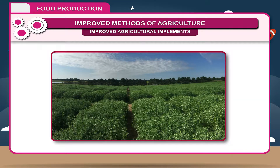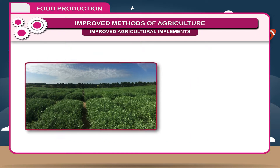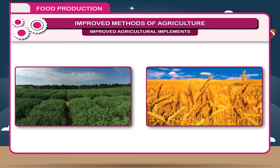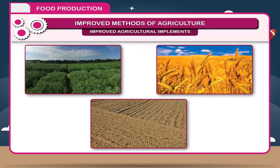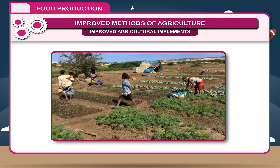Generally, a pulse crop is grown after a cereal crop so that the fertility of soil may be restored. In crop rotation, different types of crops are grown in succession on the same land.